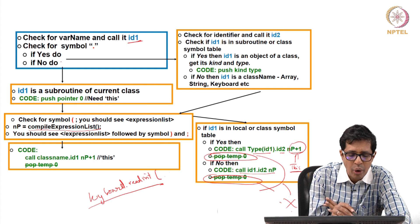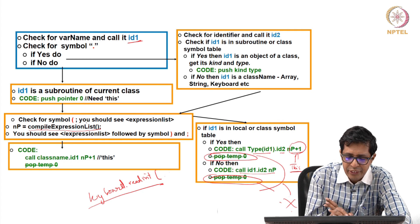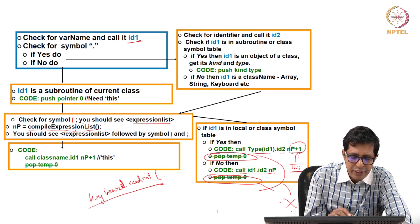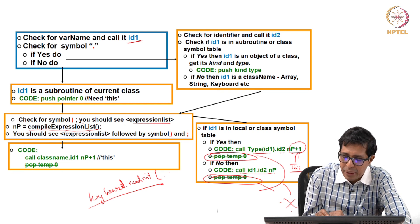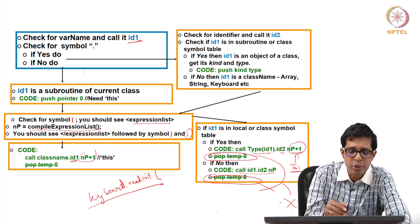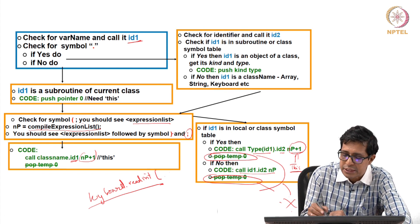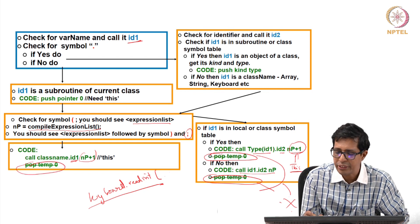If it is just id1 without a dot, we push pointer 0 because this is a subroutine of the current class. We check for the open parenthesis, then compile expression list, which loads all arguments onto the stack. After the closing parenthesis, the code is call className.id1 with np+1 arguments, because this is there. The difference from the do statement is that pop temp 0 is removed in all these cases.